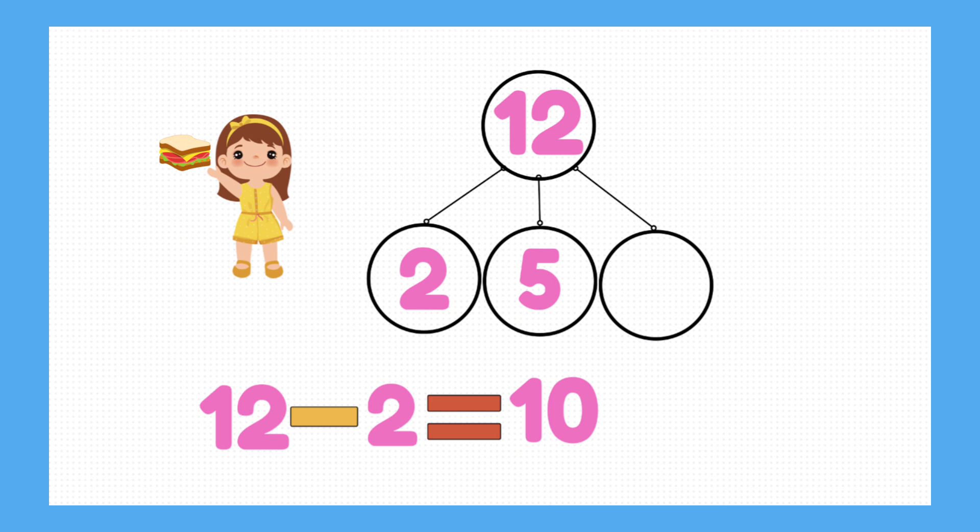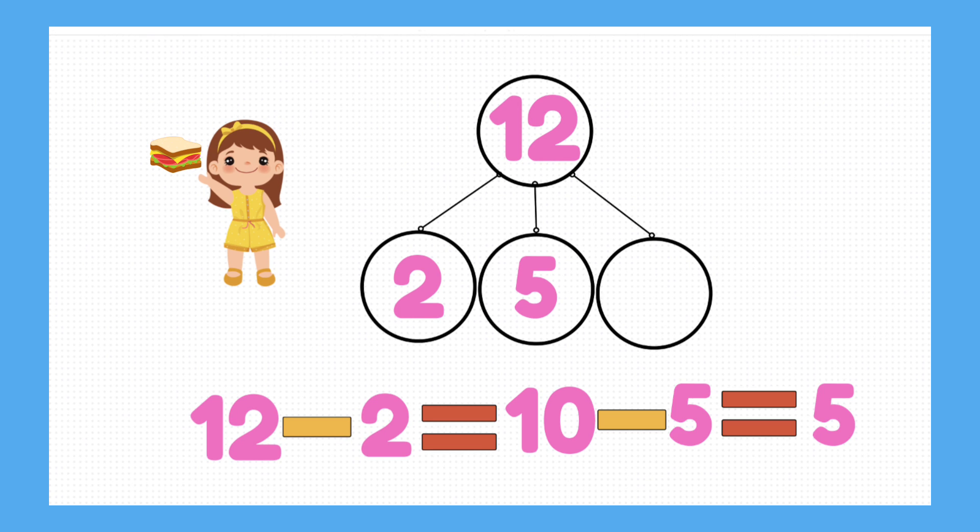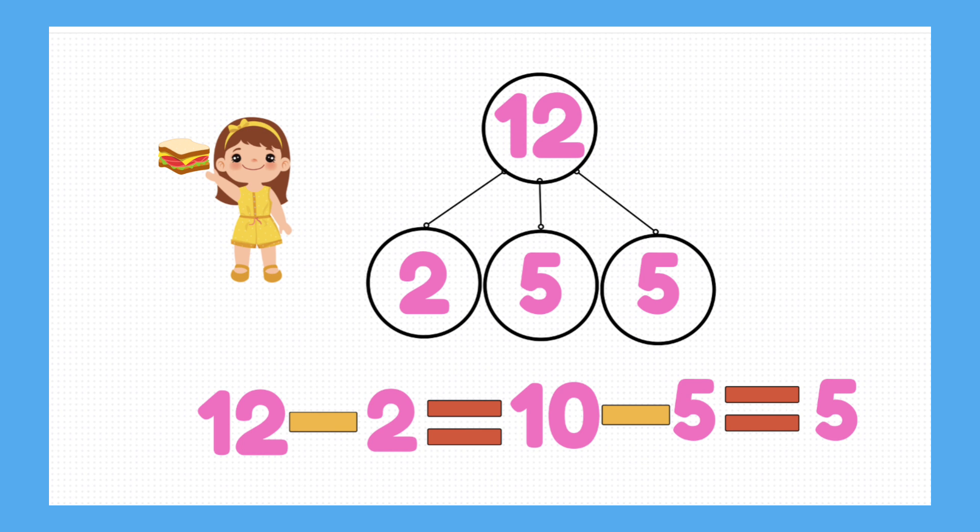We know that Ella starts off with 12 sandwiches. If her mum eats 2, then we can take this away from 12, which gives us the answer of 10. Then, her dad eats another 5 sandwiches. So we can work out 10, take away 5, which gives us our final answer of 5.